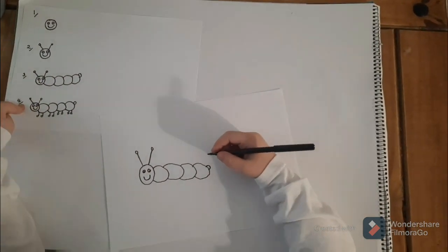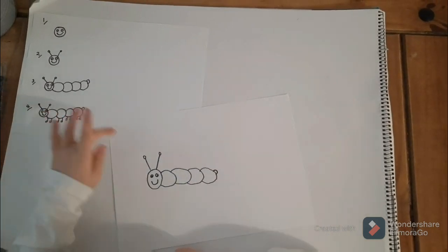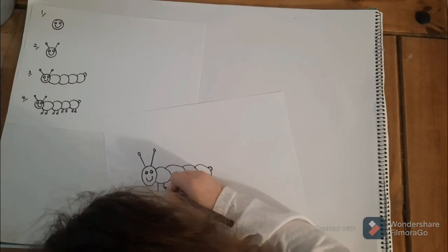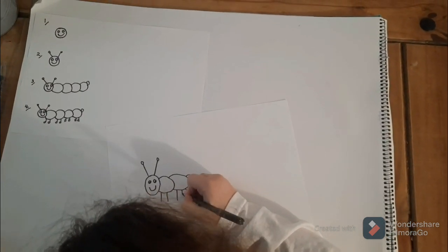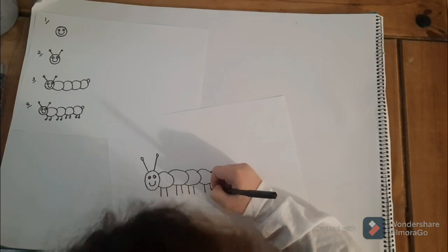Step four, the feet. So it's going to be two legs coming out of each circle. So one, two, three, four, five, six, seven, eight.